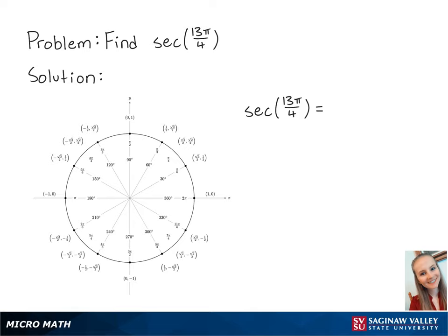For this problem, we're going to find secant of 13π over 4. Secant of 13π over 4 is equal to 1 over cosine of 13π over 4.